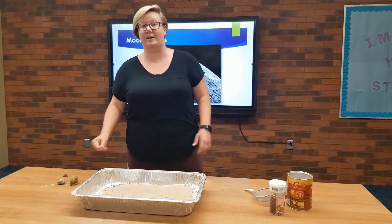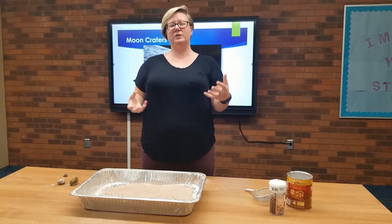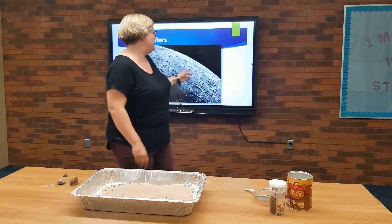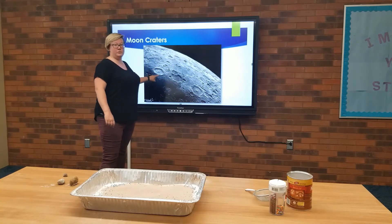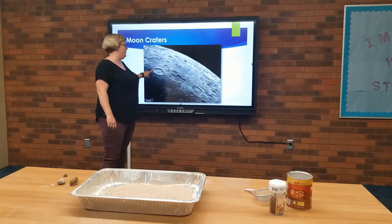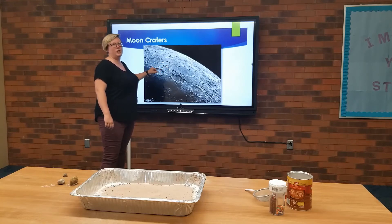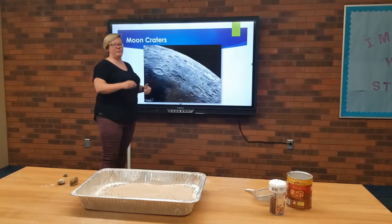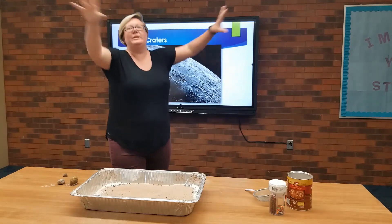Now we're going to take our asteroids and crash them into the lunar soil. The things we're going to look for are these big circles. On the outer part, you're going to have this outer rim that's created. And then you might see some lines kind of come out — those are called the ejecta lines. Those happen when something big crashes and lands and you have things fly out.